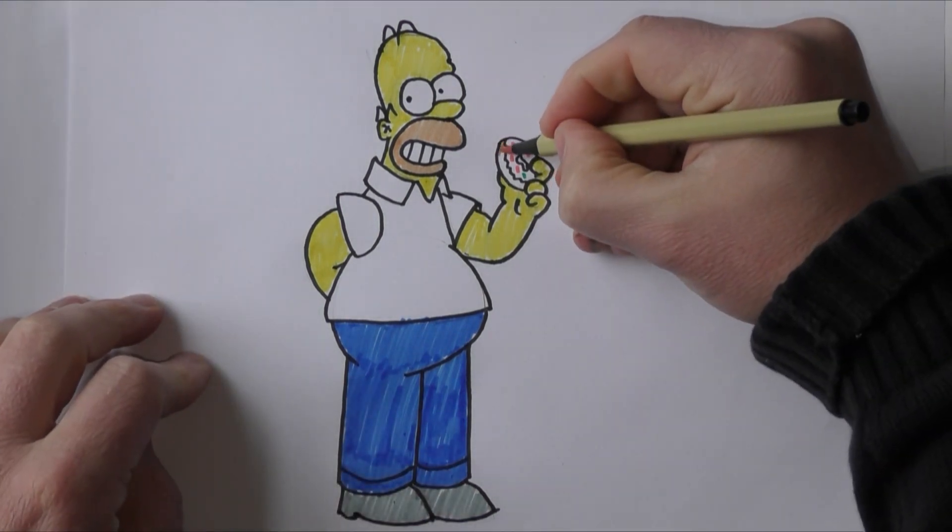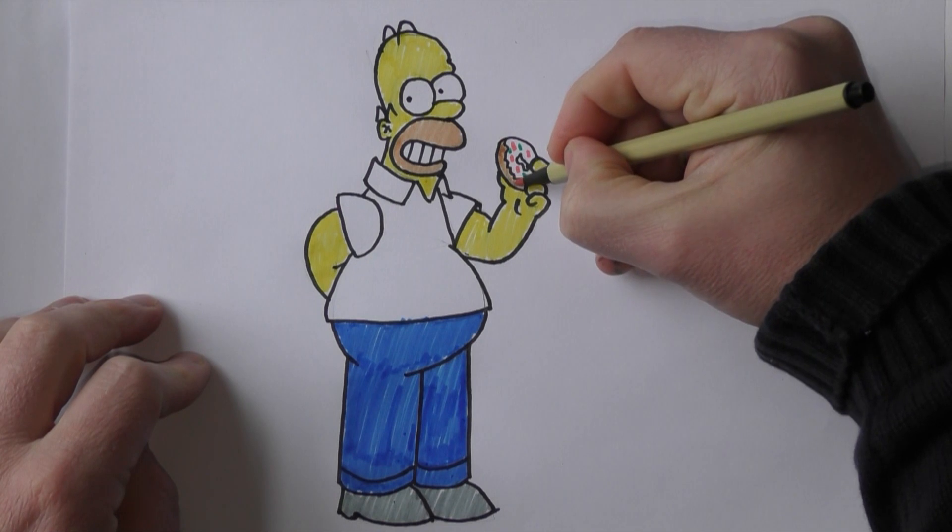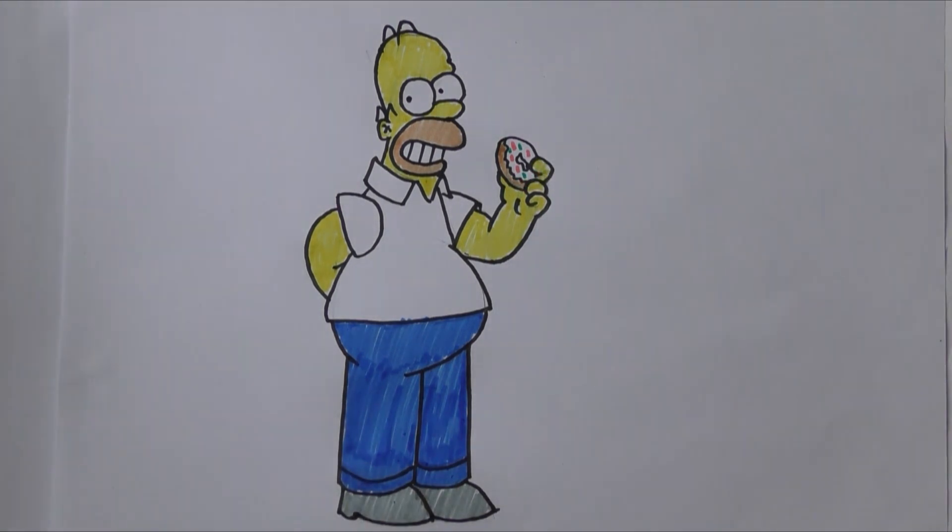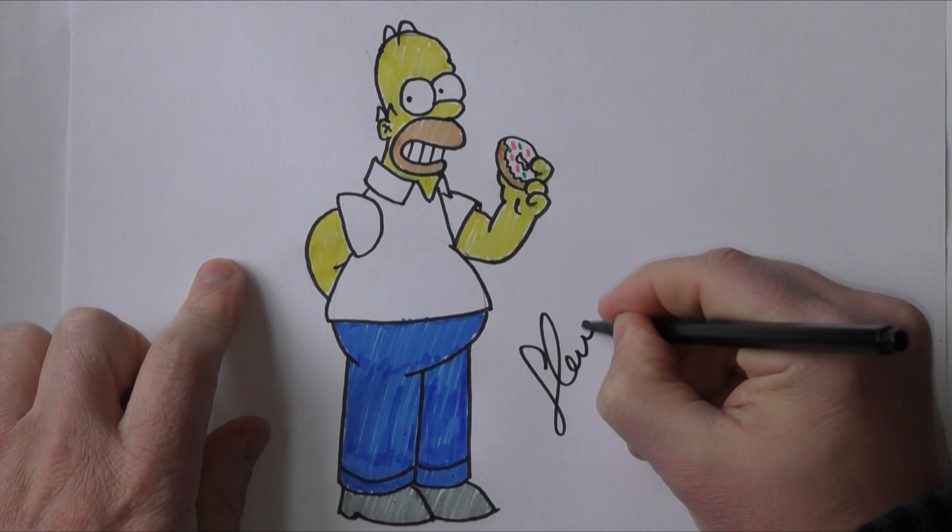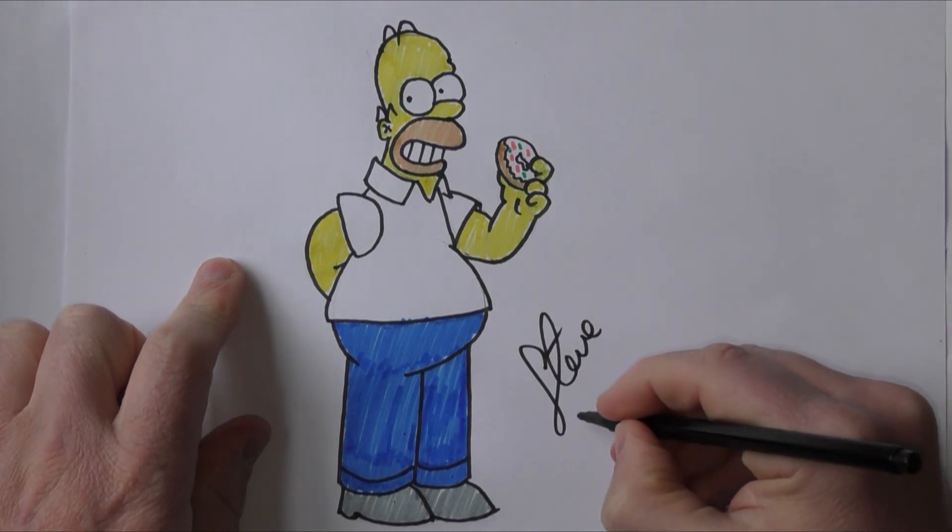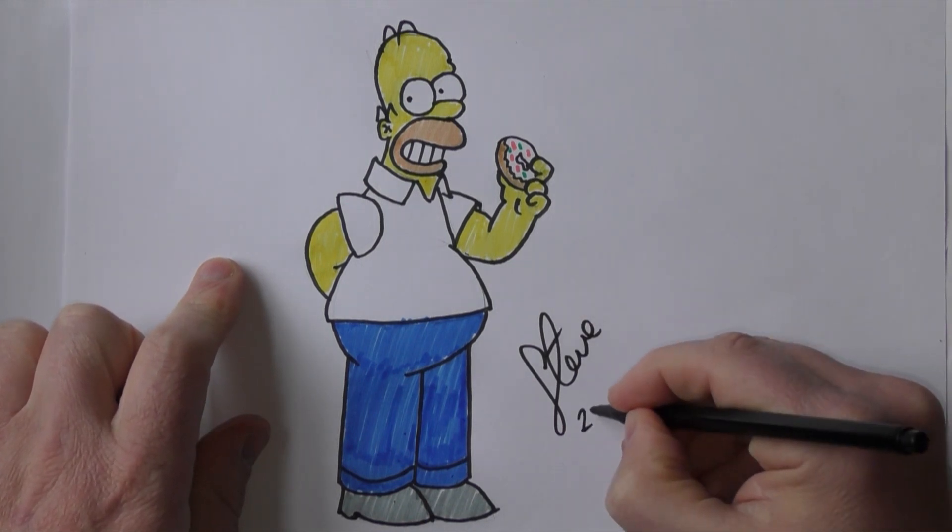And now we'll just color in the bottom of the donut with a pen. And there we go, there's your Homer Simpson. As always when you've done your drawings, one of the most important things you do as all artists do is you've got to sign your piece of work and put the date on the bottom. So there we go, there's my name and it's the 26th day of March.